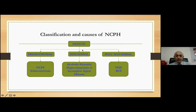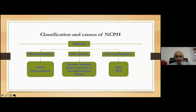What today concerns us is the hepatic causes of portal hypertension. This could be pre-sinusoidal, sinusoidal, and post-sinusoidal. In pre-sinusoidal, the commonest causes include non-cirrhotic portal fibrosis and schistosomiasis, which is a common problem in Egypt. In sinusoidal causes, even in the absence of cirrhosis, you may have alcoholic hepatitis. In post-sinusoidal causes, you have veno-occlusive disease and Budd-Chiari syndrome.